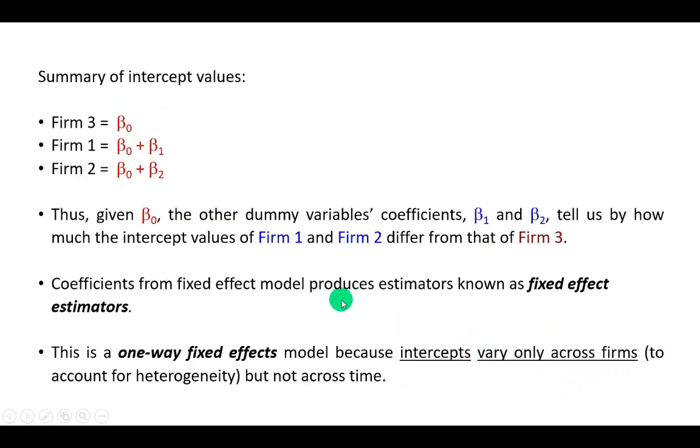So to summarize, the intercept value for firm 3 is beta sub 0, which is what we directly observe after we view the regression output. For firm 1, it's going to be the sum of beta sub 0 and beta sub 1, and for firm 2, sum of beta sub 0 and beta sub 2.